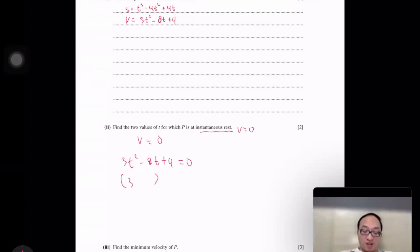Can we factorize this? This is 3t, this is t. To make it negative 8, we should have 2 and 2. So negative 6, negative 2. So t equals 2 over 3, or t equals 2 seconds.